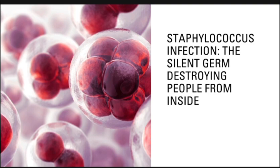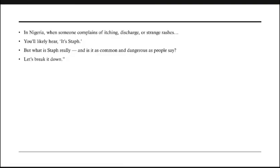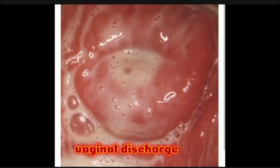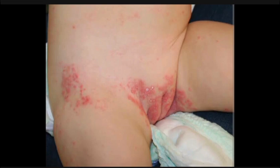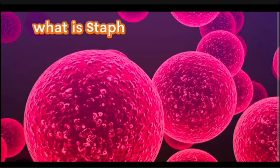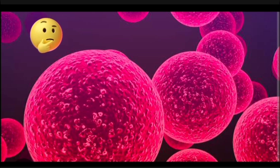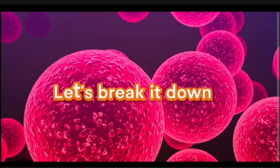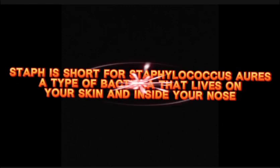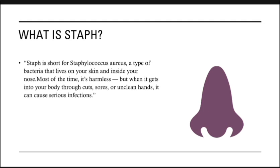In Nigeria, when someone complains of itching, discharge, or strange rashes, you'll likely hear 'it's staff.' But what is staff really? Staff is short for Staphylococcus aureus — a type of bacteria that lives on your skin and inside your nose. Most of the time it's harmless, but when it gets into your body through cuts, sores, or unclean hands, it can cause serious infections.